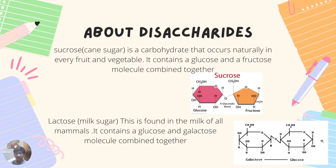Now let's talk about disaccharides in detail. Sucrose, also known as cane sugar, is mostly found in the stem of sugar cane. It occurs naturally in every fruit and vegetable and contains a glucose and a fructose molecule combined together — you can see in the diagram that the sucrose molecule consists of these two bonded together. Lactose, or milk sugar, is found in the milk of all mammals and contains glucose and galactose combined together.